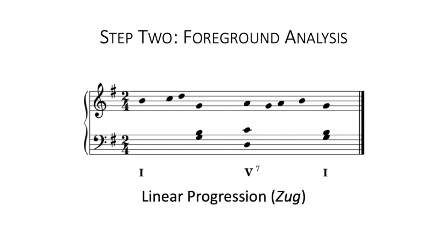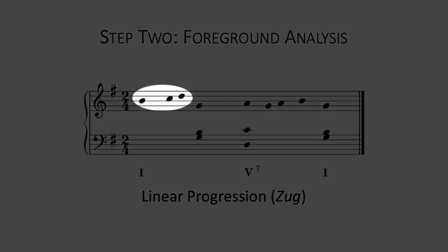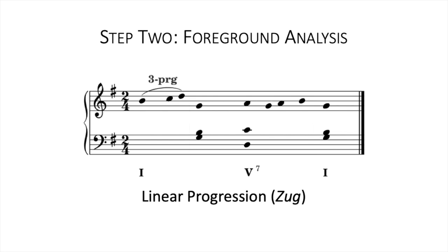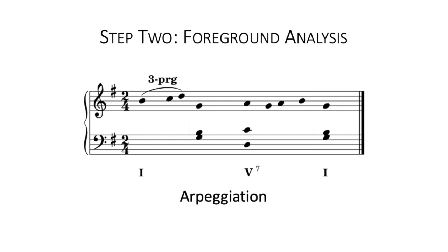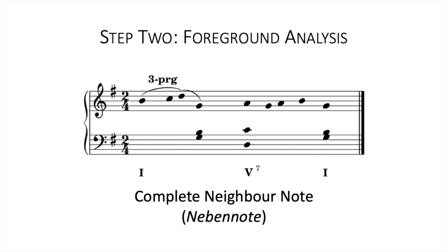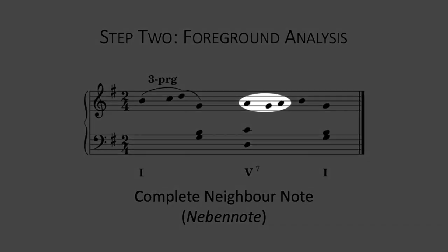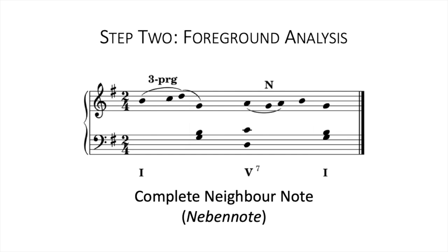What foreground elaborations can we find here? First we see a linear progression — this is a stepwise motion in one direction between two harmony notes, called a Zug in German. Here it's a third progression, going down from the B to the D, passing by the C. It's marked like this. Next, we have a skip down from D to G. We're still in the same tonic harmony, so we identify this as an arpeggiation, which we'll indicate with a slur. Over the dominant harmony, we first have a complete neighbor note, or Nebennote in German. This is a note that moves away from the harmony note and then moves back. Here, the harmony note is the A, moving down to the neighbor note G, then back up to the A. We note it with a slur and an N for neighbor.